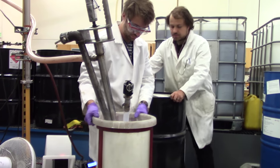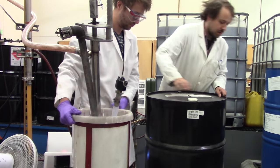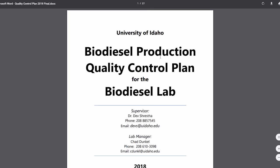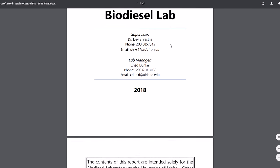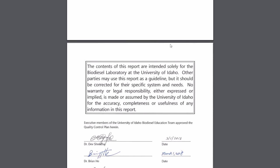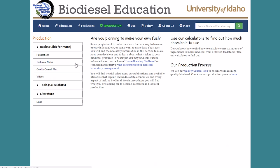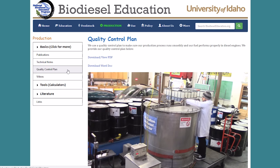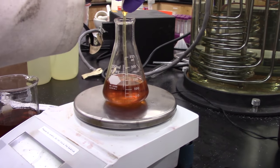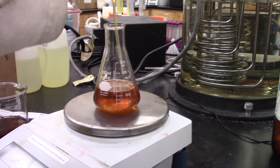To ensure that sound procedures are used and that a high quality biodiesel is produced, we follow our quality control plan. The quality control plan provides a detailed description of our process and is available on our biodiesel education website. First, we want to make sure our feedstock is suitable for making quality biodiesel.